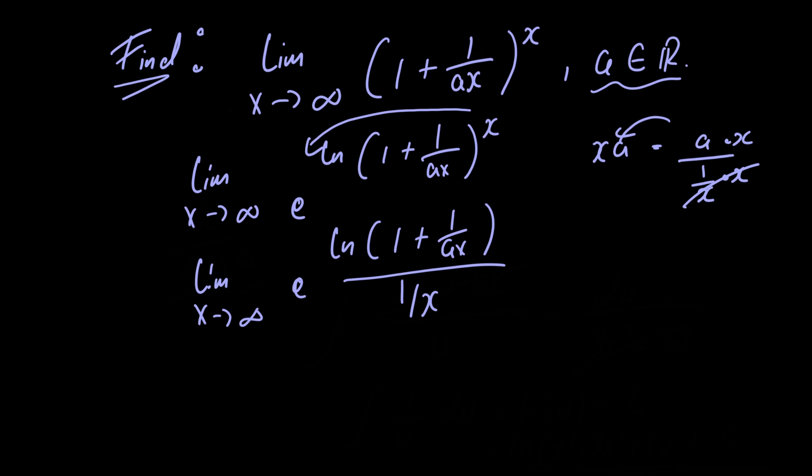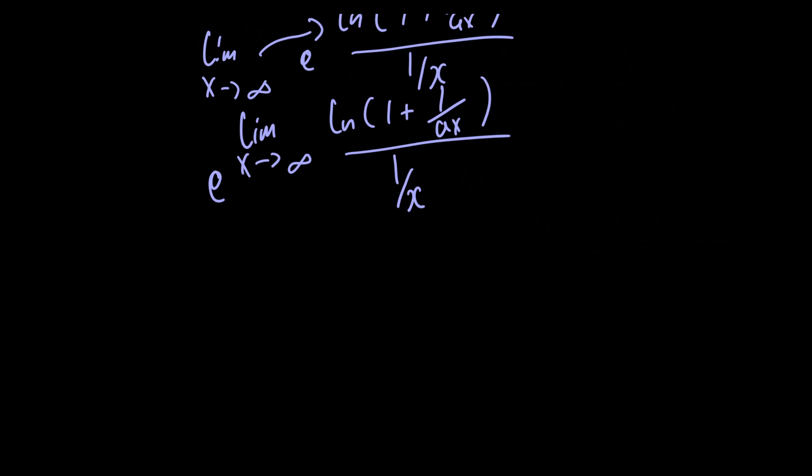So as the exponential function is continuous we can move the limit inside of it. So we have e raised to the limit as x approaches infinity of the natural logarithm of 1 plus 1 over a times x divided by 1 over x. Notice that this limit is of indeterminate form 0 over 0. So in order to solve it we're going to have to apply L'Hopital's rule.